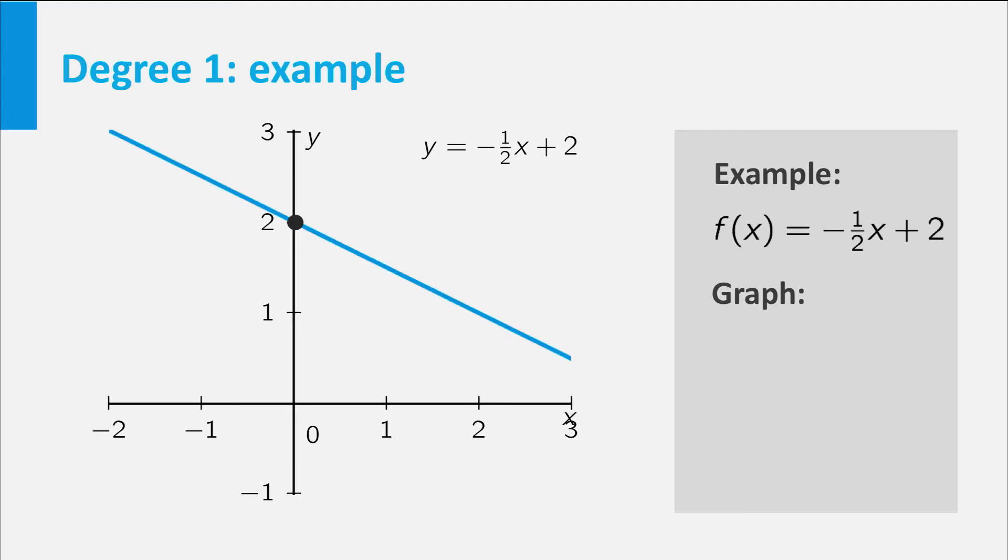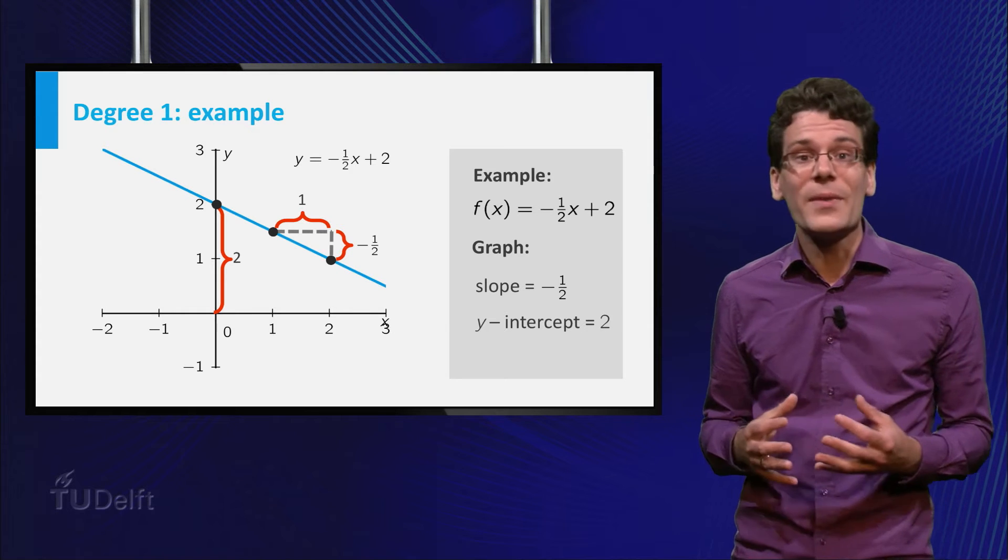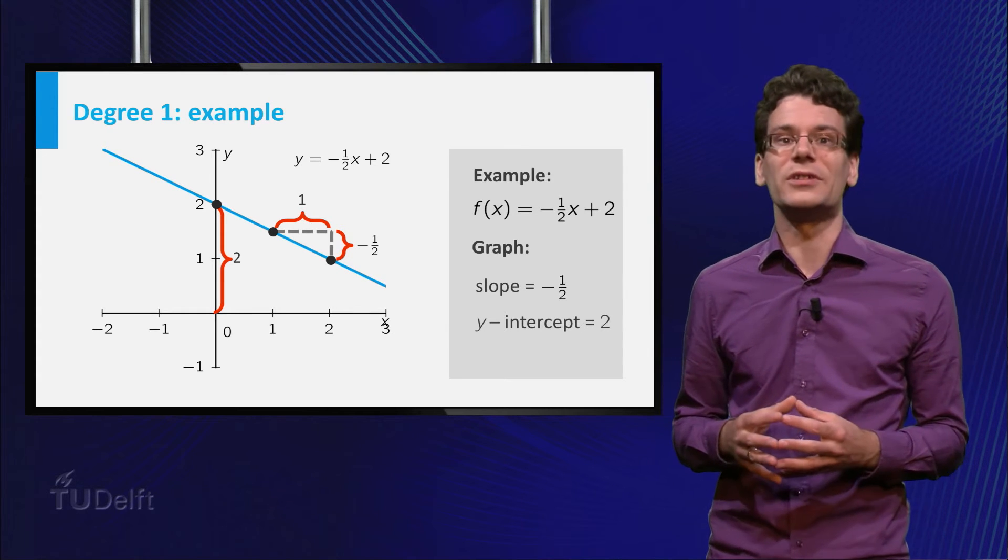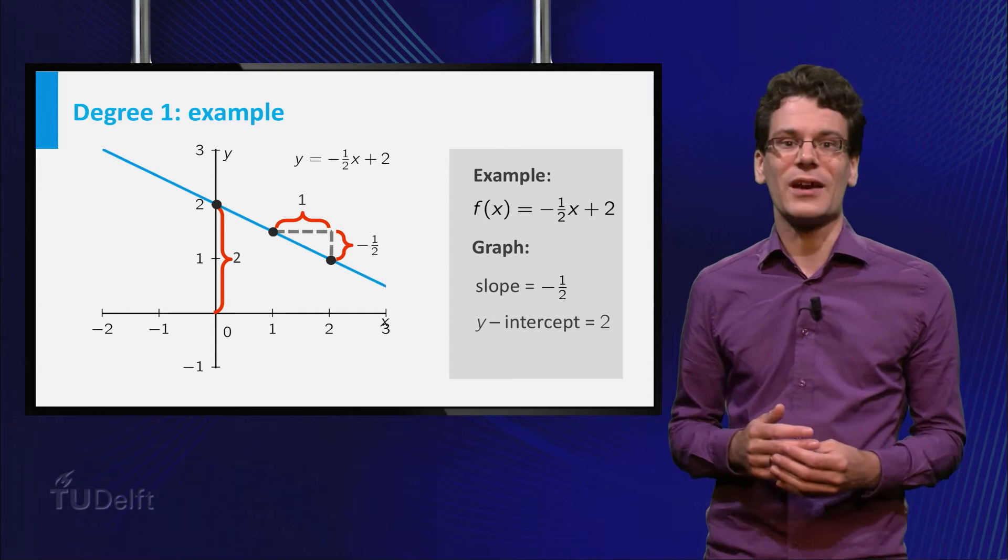For example, let's look at the graph of the linear function f of x equals minus 1 half x plus 2. And indeed you see from the graph that the slope is minus 1 half and the y-intercept equals 2. It is surprising how many dependencies between everyday quantities can be modeled by linear functions. You will see examples of such dependencies in the exercises.